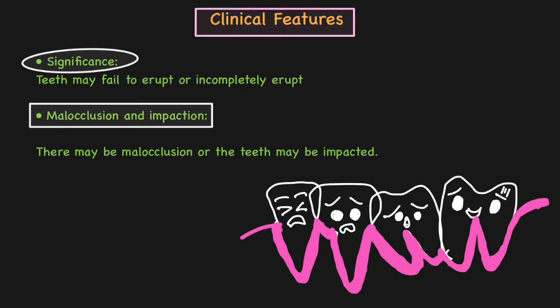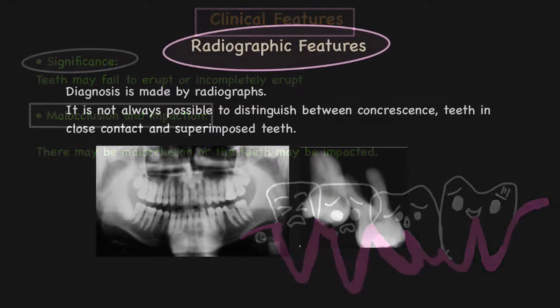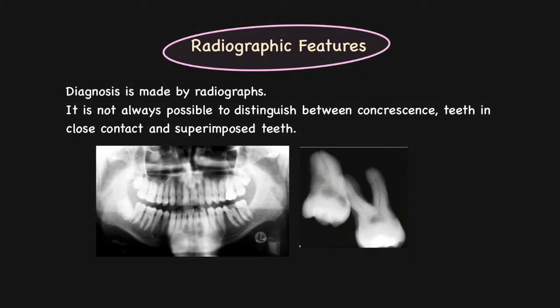Moving on to the clinical significance of concrescence. Because of this anomaly, the teeth might fail to erupt or erupt incompletely within the oral cavity. Such an anomaly may also predispose to malocclusion as well as impaction.